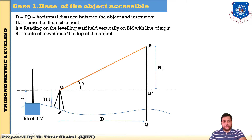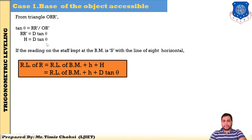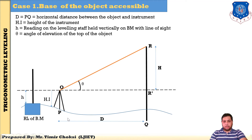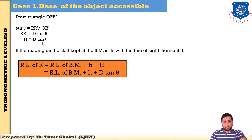Now you have found H = D tan theta. Then find the RL of point R — the reduced level of point R. When you find the derivation or example in any case, you have to find D, capital H, and RL. But in case number 1, the base of the object is accessible, so you can directly find capital D using tape or chain. In case number 1, you can find H and then the third value, RL.